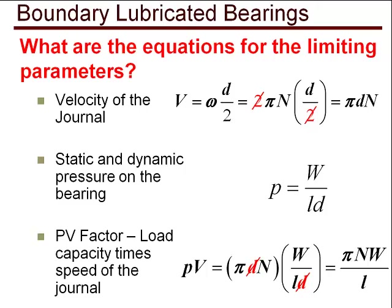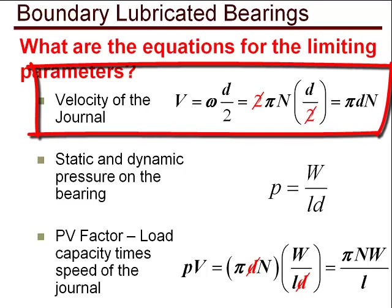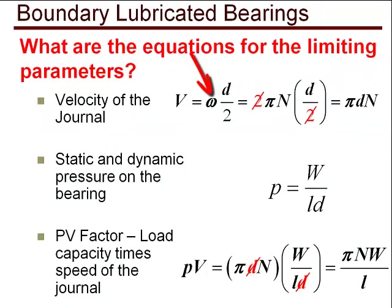Let's look at the equations for these parameters. First, the velocity is the surface velocity of the journal, or the angular velocity of the journal times the radius. And when we put in what omega is equal to, 2 pi n, and what the radius is equal to, the diameter divided by 2, that will equal pi d n. The pressure is the load on the journal divided by the projected area of the bearing, which is the bearing ID times the length of the bearing, or l times d. And finally, the PV factor is the product of the pressure and the velocity.